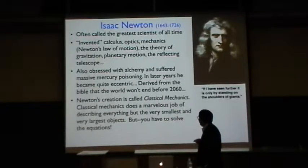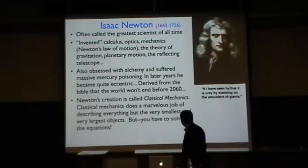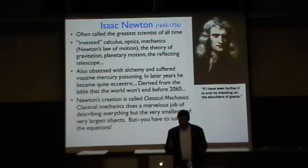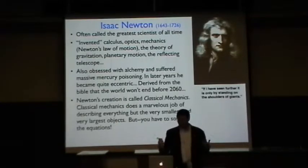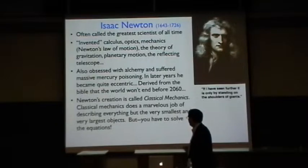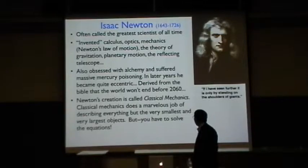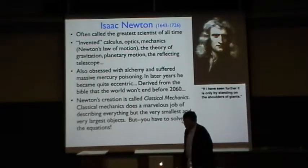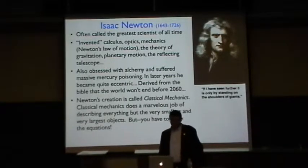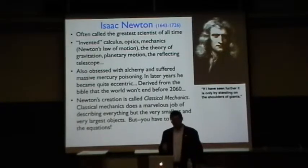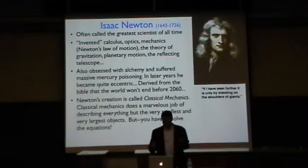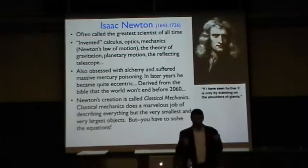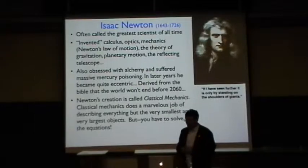Newton's creation, this mechanics and everything else, is called classical mechanics, and that was the central structure of physics for 200 years until it started to be overturned by relativity and quantum mechanics. Classical mechanics does a marvelous job of describing everything but the very smallest and the very largest objects. Classical mechanics gives you a set of equations, and then it's a separate matter to solve those equations.